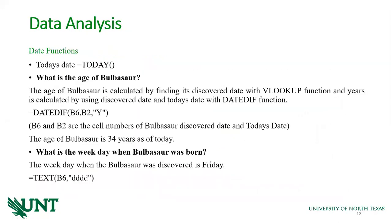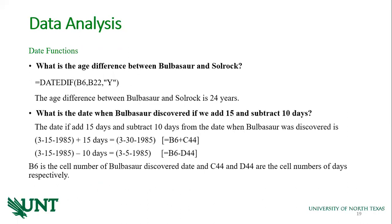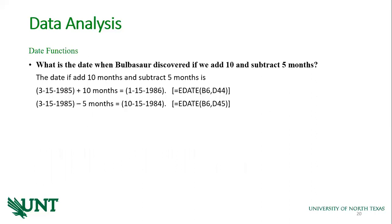For performing date functions, I added a discovered date column to our dataset, which represents the date when a Pokemon came into existence. We can find today's date using the TODAY function and calculate the age of a Pokemon. For example, the age of Bulbasaur is calculated by finding its discovered date using VLOOKUP and then computing the difference with today's date using the DATEDIF function. We can also find the age difference between two Pokemons and add days or months to a particular date using date functions.